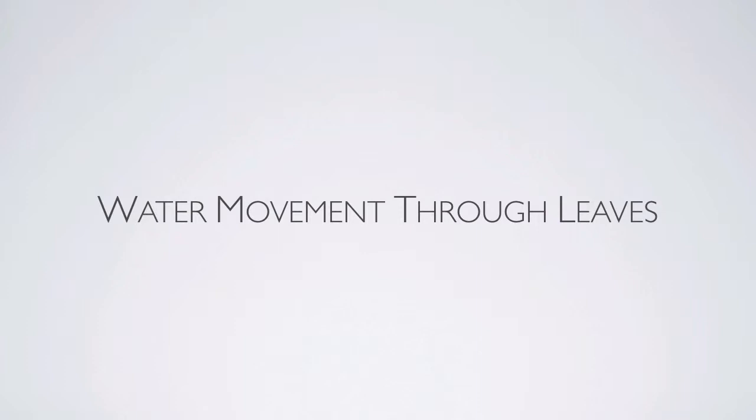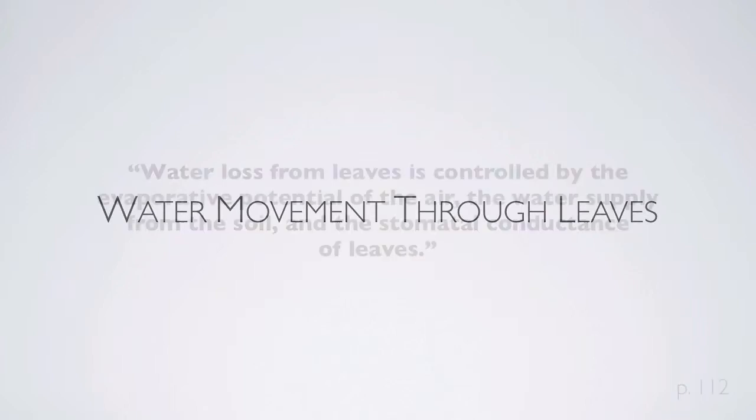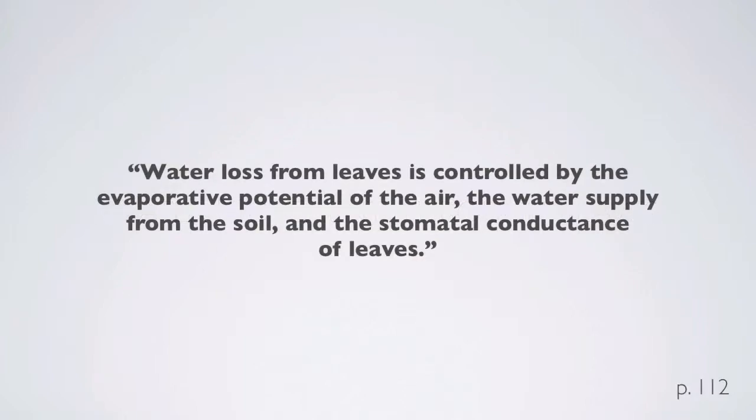We've already talked about water movement through roots and stems, and here we'll cover water movement through leaves. Water loss from leaves is controlled by the evaporative potential of the air, the water supply from the soil, and the stomatal conductance of leaves.